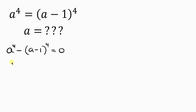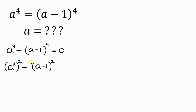Our next step will be to express this in the power of 2. A to the fourth can be written as A squared to the power of 2, because from indices, 2 times 2 gives 4. Minus — doing the same to the other term — A minus 1 squared, raised to the power of 2, since 2 times 2 also gives 4. Equal to 0.